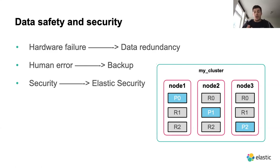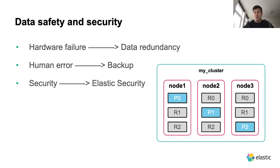While replicas are useful for preventing hardware failure, we're still prone to human errors. You can have as many replicas and nodes as you want, but it's enough for someone with admin access to issue a simple DELETE command with an index name, and all your production data can be lost. A single 'DELETE production_data' will get rid of everything in all primary and replica shards. For that reason, you need to think about backup options.